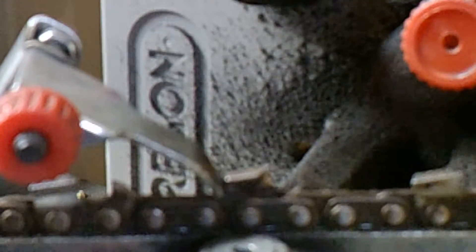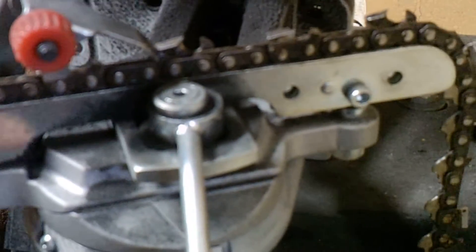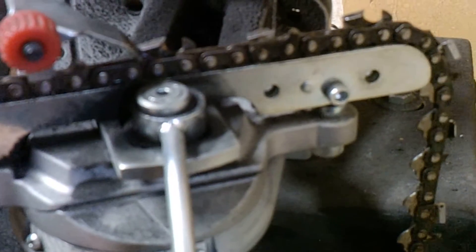Now with a power chainsaw sharpener, I'm going to do this chain here. You have a degree wheel. This area right here has different degrees and you want to sharpen it at 30 degrees on the big chains.